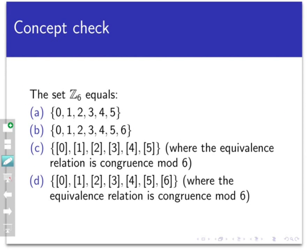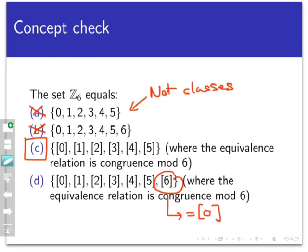So here's another concept check to see if you can generalize this idea. What is the set of integers modulo 6, or z6? The best answer here is going to be C. Now, the integers mod 6, z6, consists of equivalence classes, not raw integers by themselves. So A and B are out here. And since the equivalence relation in question here is congruence mod 6, notice that the class of 6 and the class of 0 are going to be the same, because under that relation, 6 is equivalent to 0. So this last set has two duplicate elements in it. And so we never duplicate elements in a set. And that's why C is the best choice here.